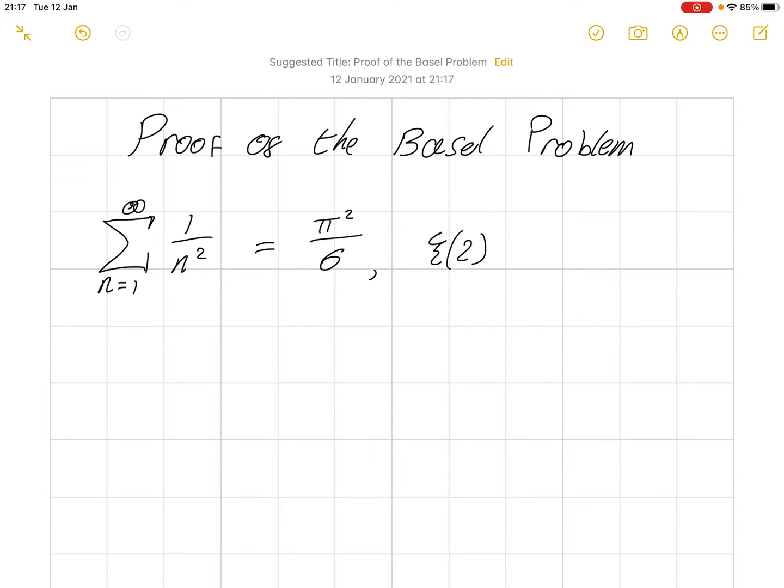So this is a bit of a strange problem because this sum converges very, very slowly, frustratingly slowly. But it does eventually converge to pi squared over 6.